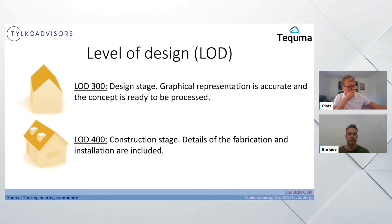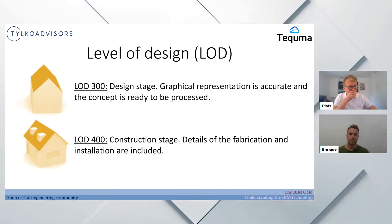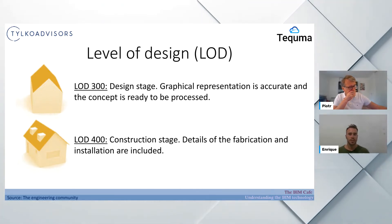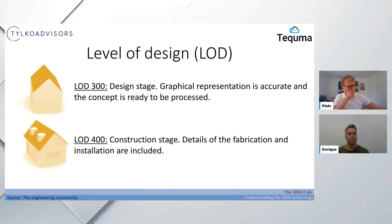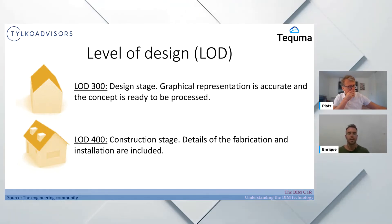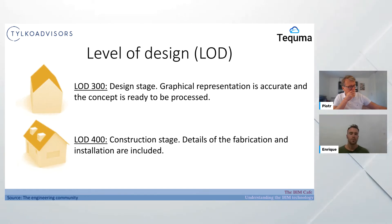LOD 300 is the design stage where we have settled and agreed on the graphical representation of the project. We know what concept we want to deliver and it's ready to be processed - not that it means no more changes, but it's defined and ready to be implemented on the construction stage. LOD 400 is the construction stage where we add information for products and installation already implemented.